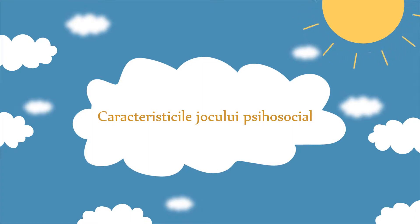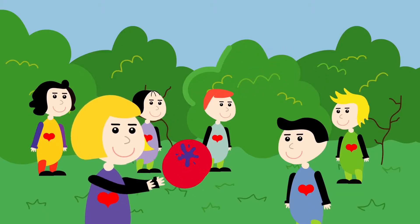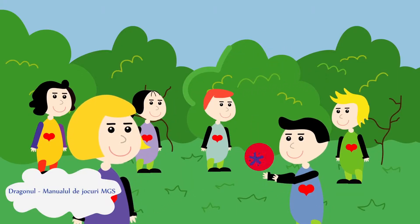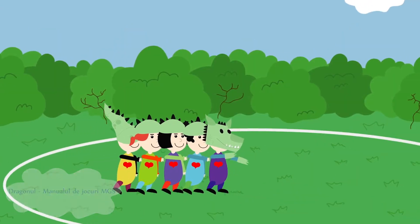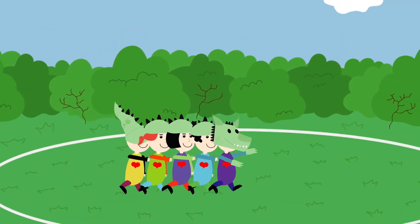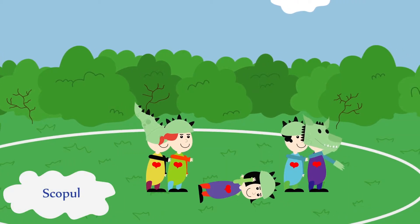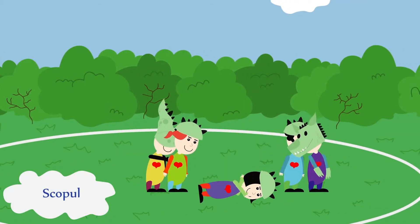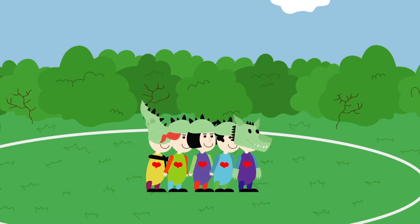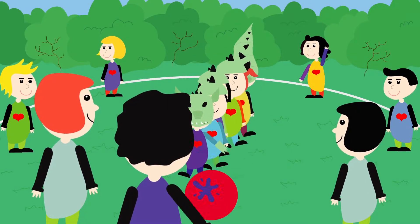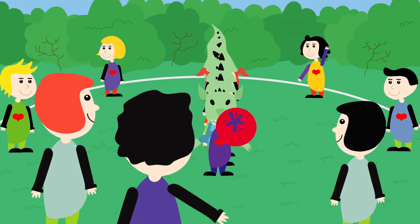The characteristics of a psychosocial game. Any game or psychosocial activity is characterized by scope, rules, frame and roles. Remember, it is a big difference between the scope of a game or activity — what kids should do — and the objective of the game, what the animator would like the child to learn through the activity.